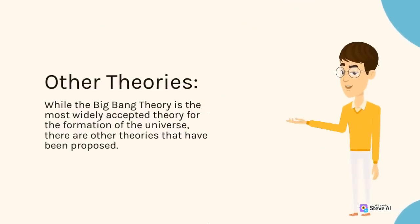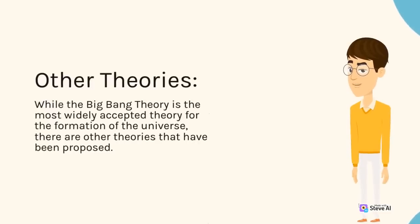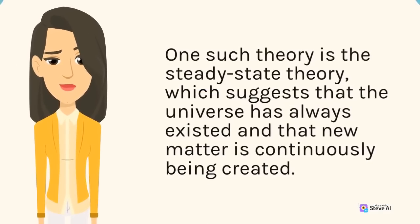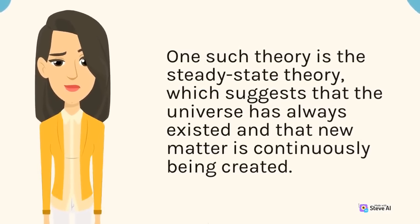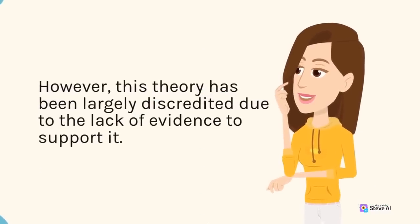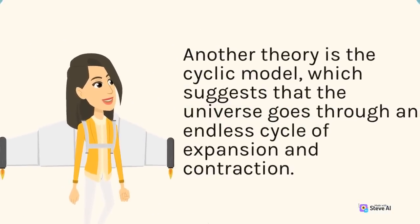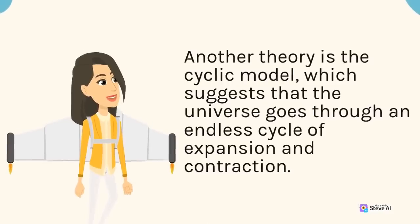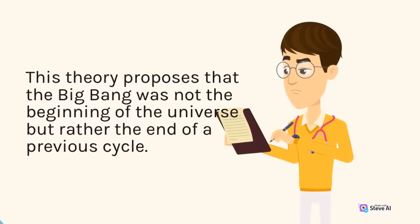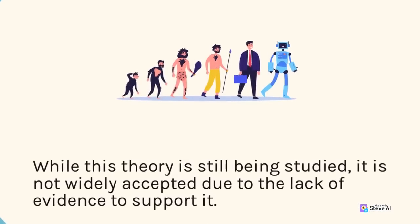While the Big Bang Theory is the most widely accepted theory for the formation of the universe, there are other theories that have been proposed. One such theory is the steady-state theory, which suggests that the universe has always existed and that new matter is continuously being created. However, this theory has been largely discredited due to the lack of evidence to support it. Another theory is the cyclic model, which suggests that the universe goes through an endless cycle of expansion and contraction, proposing that the Big Bang was not the beginning but the end of a previous cycle. While this theory is still being studied, it is not widely accepted.